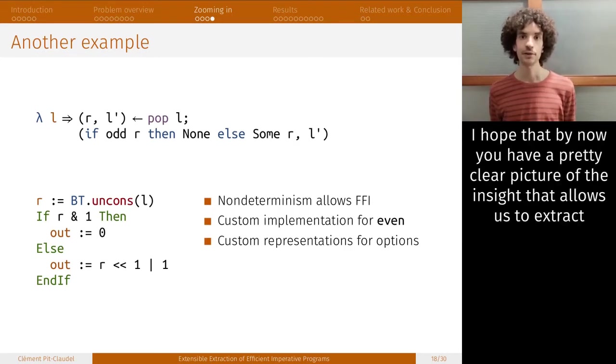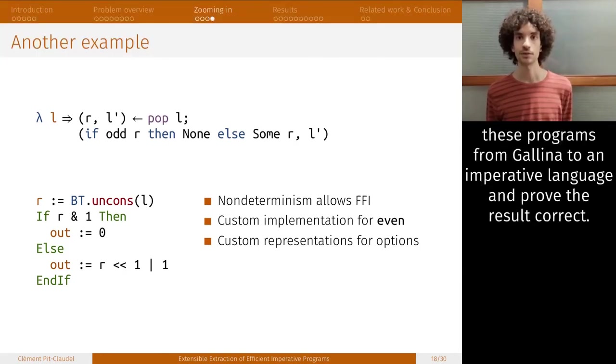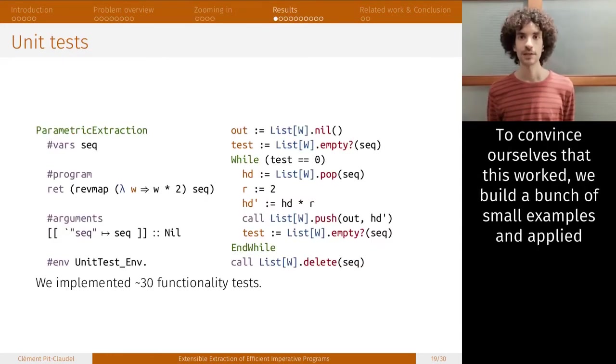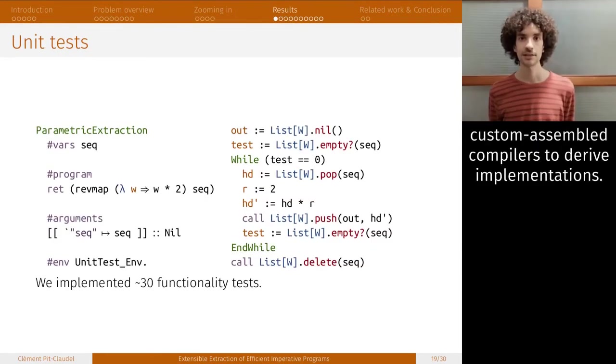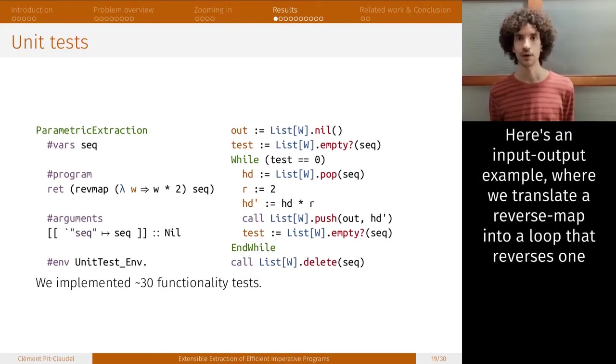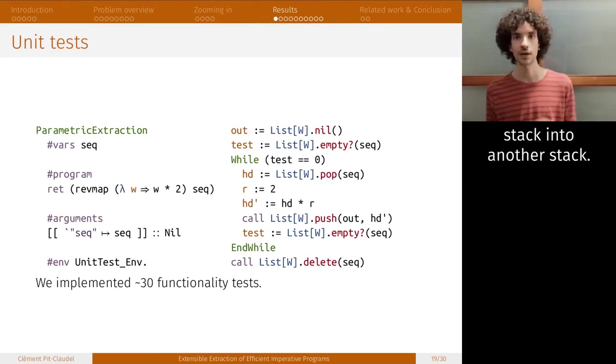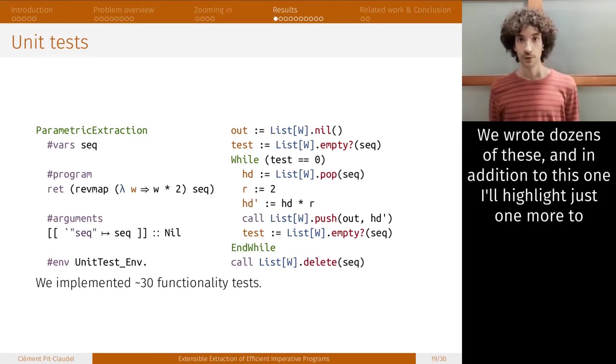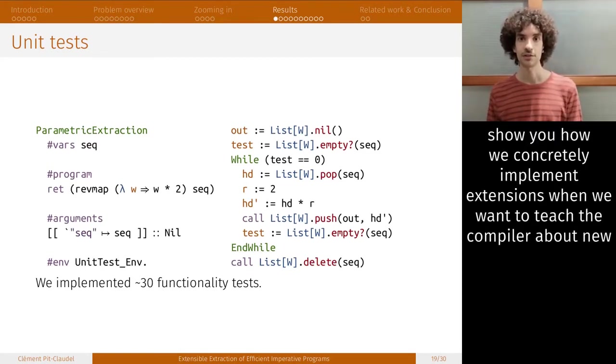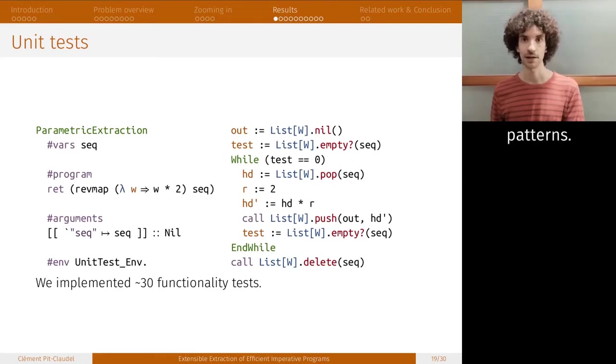I hope that by now you have a pretty clear picture of the insight that allows us to extract these programs from Galena to an imperative language and prove the result correct. To convince ourselves that this worked, we built a bunch of small examples and applied custom-assembled compilers to derive implementations. Here's an input-output example, where we translate a reverse map into a loop that reverses one stack into another stack. We wrote dozens of these.